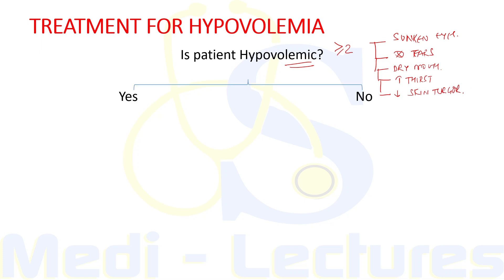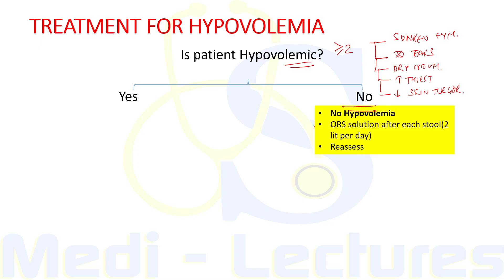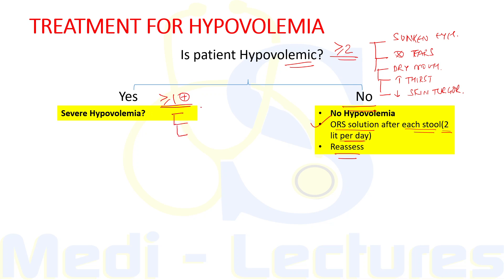If two out of these five features are present, the patient is labelled as hypovolemic. If there is no hypovolemia, we ask the patient to take ORS solution after each loose stool — up to two liters of ORS per day — and reassess within the first six hours. If hypovolemia is confirmed, we then assess whether it is severe. Severe hypovolemia is defined by any one of: lethargy or unconsciousness, inability to drink water, or a weak radial pulse on examination.